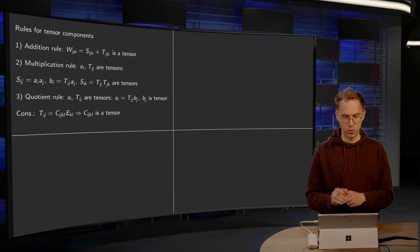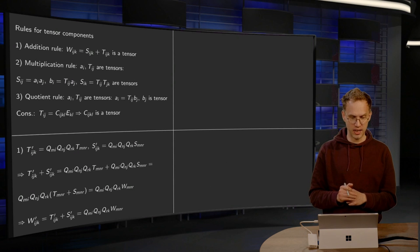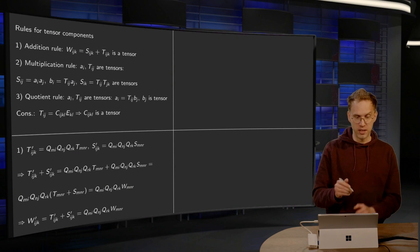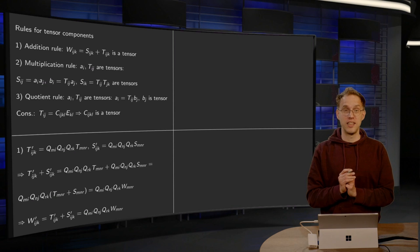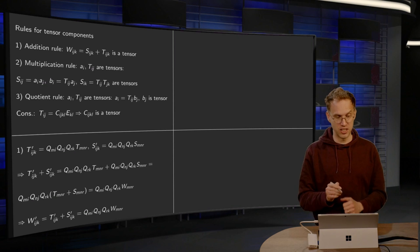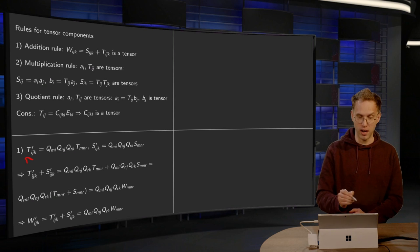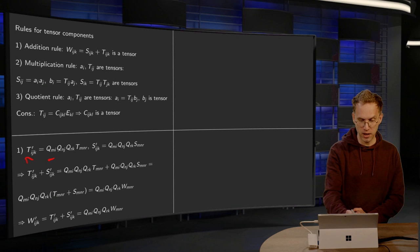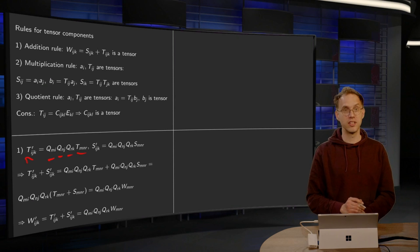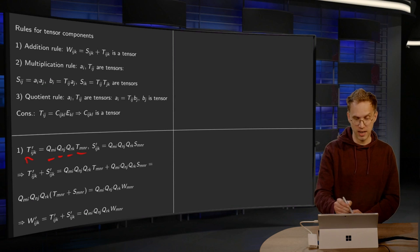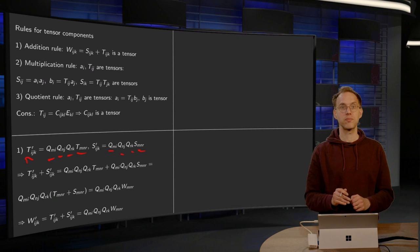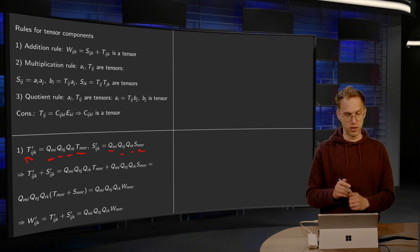Now, let's show why these rules hold. First the addition. So Tijk is a tensor, and Sijk is a tensor, so if you go to prime basis, then Tijk prime, you have three Qs: Qmi, Qnj, Qrk, times your old tensor. And the same for Sijk prime, you have these three Qs, times your old tensor.